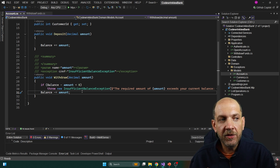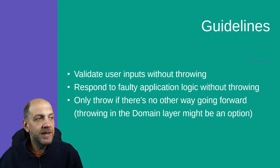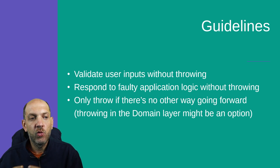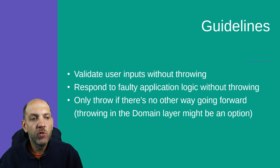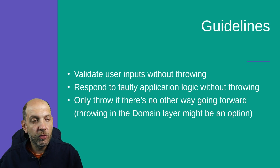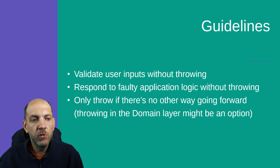To summarize, I think we can stick to these three simple aspects: First, validate user inputs or data entry without throwing exceptions, and do this at the edge of your application — right where the data enters your system. Second, respond to faulty application logic also without throwing by using something like the result pattern. Third, as a last line of defense, only throw if there's no other way forward — if not throwing would mean placing your application in an invalid state, then you should definitely throw.